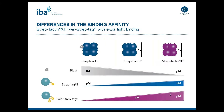To better understand the differences in binding affinities within the Streptag system, this overview shows the binding affinities of the ligands Biotin, Streptag2, and Twin Streptag to the receptors Streptavidin, Streptactin, and Streptactin XT. The Biotin-Streptavidin binding is one of the strongest in nature, with a binding affinity in the femtomolar range. Since the biotin binding pocket of Streptactin was mutated, its binding affinity for Biotin is reduced compared to Streptavidin, and it is further decreased for the Biotin-Streptactin XT binding.